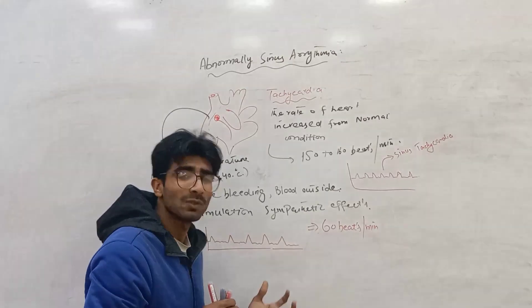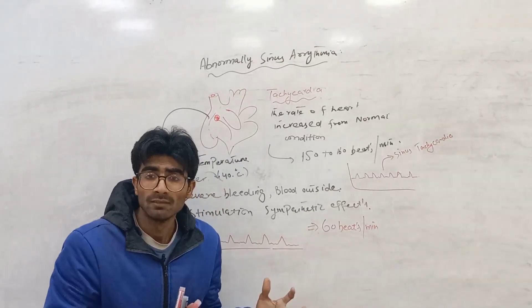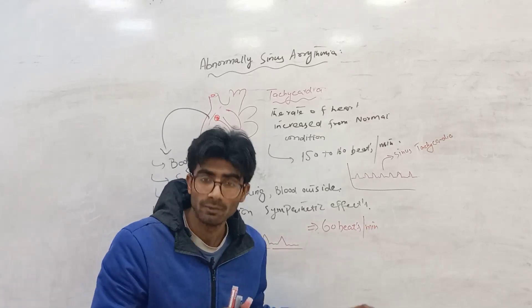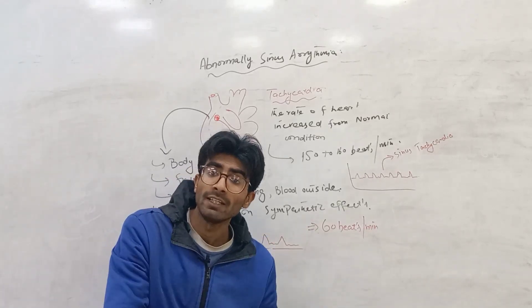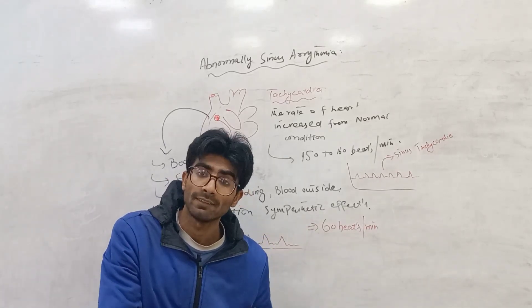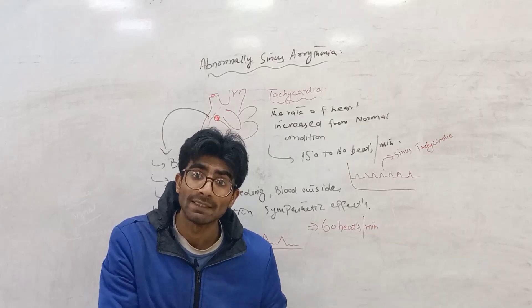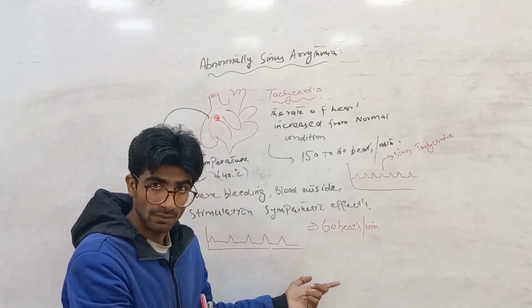In the bradycardia situation, the effect of acetylcholine — when released on the vagus nerve — causes the vagus nerve to decrease the heartbeat.